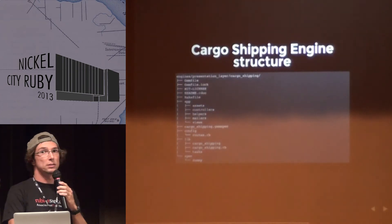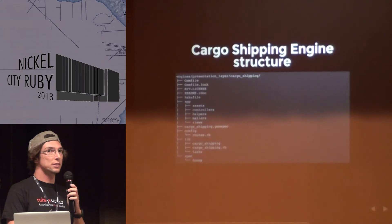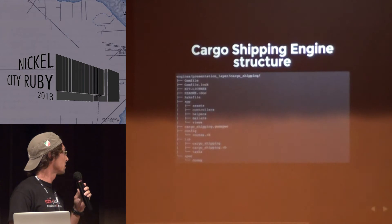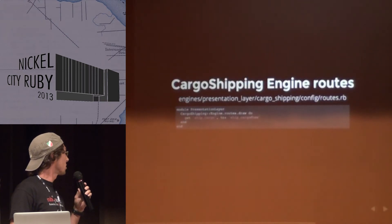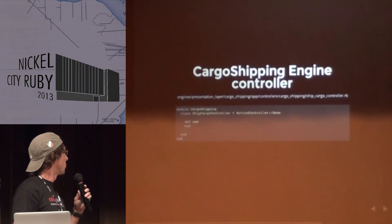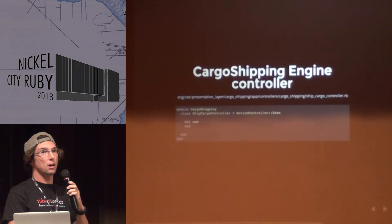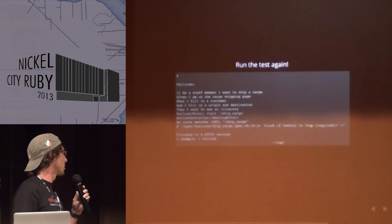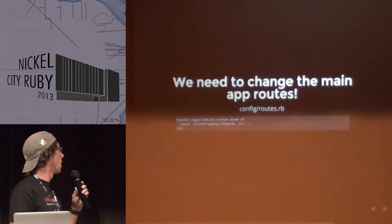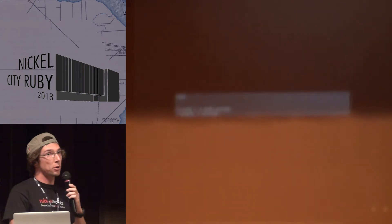Inside the cargo shipping engine, we can see that the directory structure is the same as a normal Rails application, but the app folder has no models. This cargo shipping engine has its own routes, defined inside the engine for the presentation layer. Inside the controller, we create a simple empty action. We run the test again — it still fails with no route match, so we mount the cargo shipping engine inside the main application's routes file. At that point the test passes.